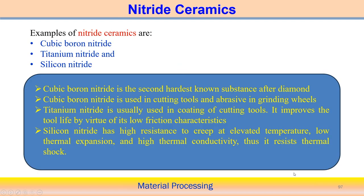Now looking at nitride ceramics: the most widely used ceramic nitride is cubic boron nitride (CBN), along with titanium nitride and silicon nitride. The application of cubic boron nitride: it is the second hardest substance after diamond. Diamond has the highest hardness and the next second highest hardness belongs to cubic boron nitride, making it suitable for use in cutting tools and abrasive particles in grinding tools.